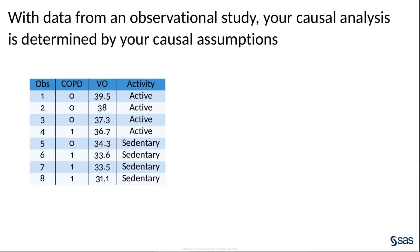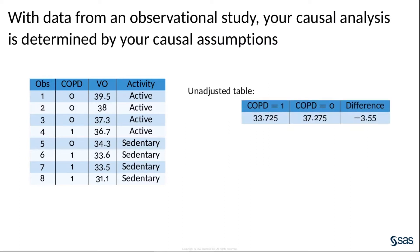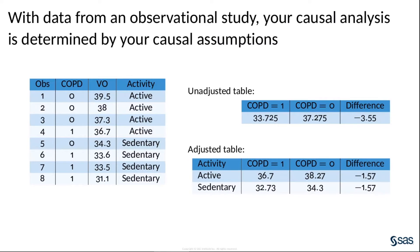In this simulated example, one quantity you can compute is the marginal association between COPD and VO2max. On the other hand, a rule of thumb is that you should always adjust for all available background covariates. In this example, you might consider self-reported activity level to be a background covariate, and so you might stratify your analysis by the levels of this variable. Thus, you have two different analyses that produce two different estimates. How can you decide which estimate best represents the causal effect you are studying?